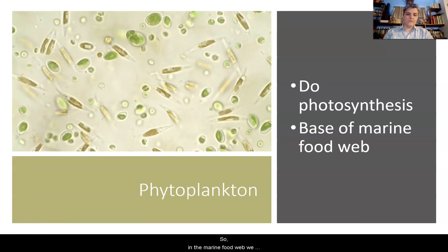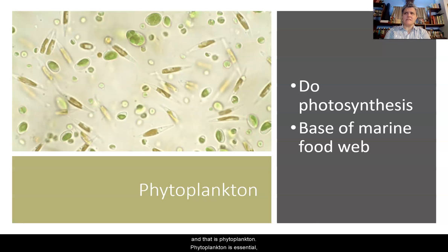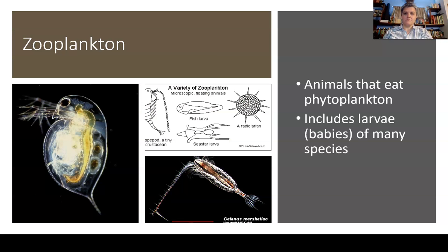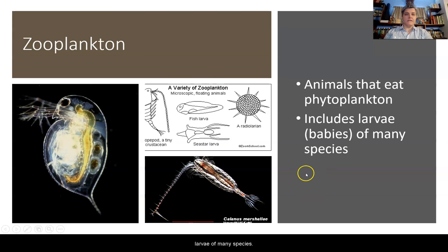In the marine food web, we want to take a look at what the foundation is — what the base of that marine food web is. And that is phytoplankton. Phytoplankton is essential because it does photosynthesis. It takes the energy from the sun, from light, and converts it into stored chemical energy. We also have zooplankton. Zooplankton are animals that eat phytoplankton, and these can often include larvae of many species.